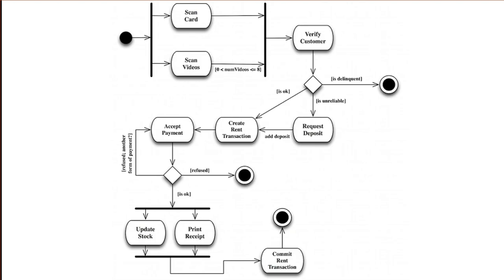That shows how easy it is to understand an activity diagram even when you don't know what all the symbols are. And that is the main point — you want to make it easy for other people to understand the process that you have thought out. You want them to get a quick overview of your idea without you having to be there and explain it to them. To be able to draw your own diagrams, you do need to know a bit more about the various symbols and rules for how to draw an activity diagram.